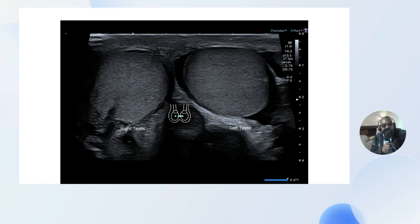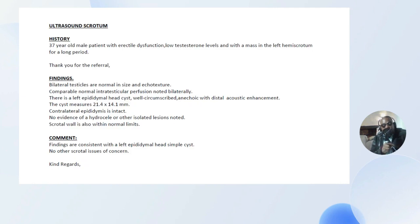When someone is having testicular pain, it is very critical to demonstrate both testicles side by side to check the echo texture. Those who need the full technique, we have our learning platform for that. Here we can demonstrate that there are no masses in the testicles involved. In this case discussion, we don't just talk about the case and leave it there — we also go on and talk about the typical or characteristic report that we make. Some people have been asking me to send model reports, so this is how we do it.